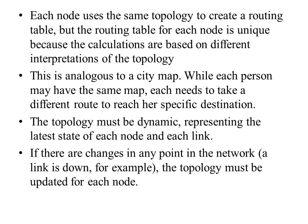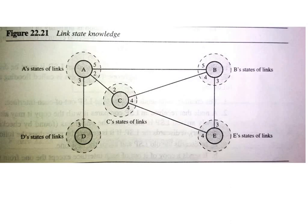This topology must be dynamic and must represent the latest state of each node. The latest state means the cost should be current, and you should know whether each link is up or down. If there are changes at any point in the network, the topology must be updated accordingly for each node. Suppose node B is removed — in that case, the topology changes get propagated to each node, and each node will contain information as per the new topology. This is the link state knowledge you need to generate.